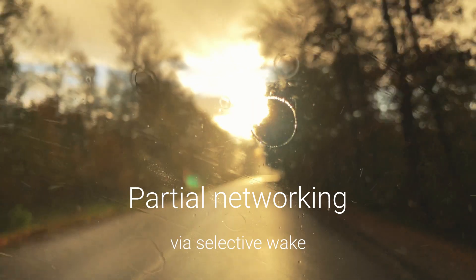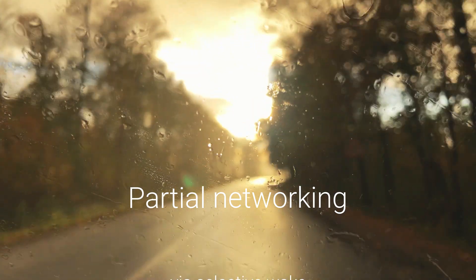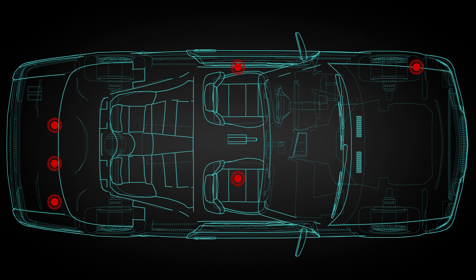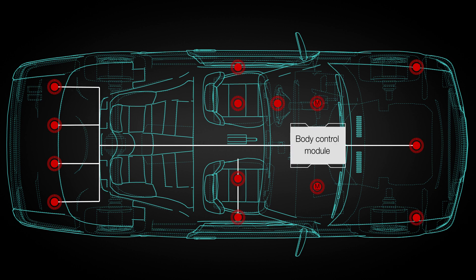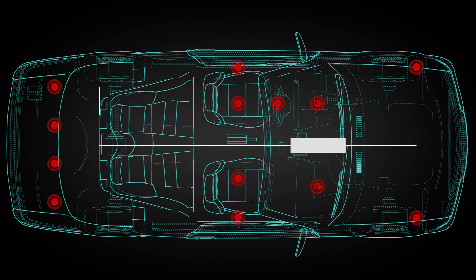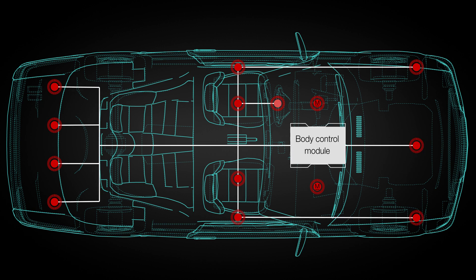Partial networking via selective wake can accomplish these functions more efficiently than in the past. Here's a basic example of a body control module using CAN-FD communication. Usually the many nodes within a vehicle are in a low power state. In this example, the driver turned on their windshield wipers. Since the wiper motors are in a low power state, the action of switching them on sends an alert to the body control module that it should wake and turn on the wiper motors.